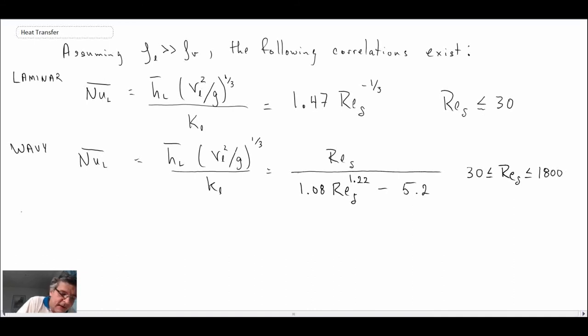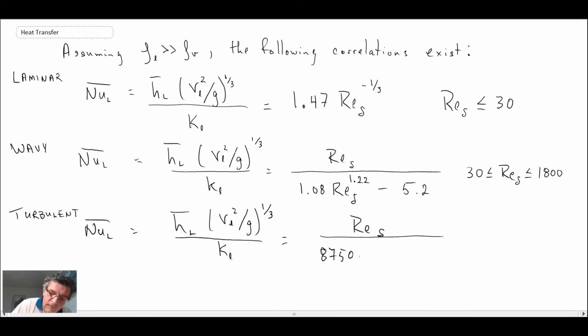And then finally, an expression for turbulent. These are obtained by taking experimental data and collapsing it. That's where the wavy and the turbulent would come from. This one has sensitivity to the Prandtl number, so we see the Prandtl number starting to appear in the relationship. That would be for the case where the Reynolds number based on delta is greater than 1800.